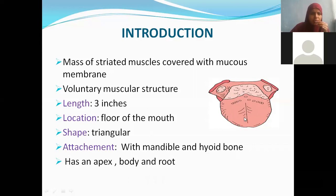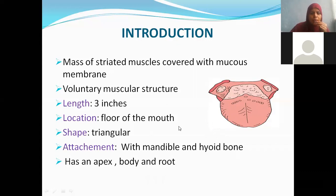Coming to the length, it is around 3 inches long and it is situated in the floor of the mouth. It is triangular. It is attached to the mandible and hyoid bone with the help of certain muscles. What are the muscles we have? Genioglossus, hyoglossus.